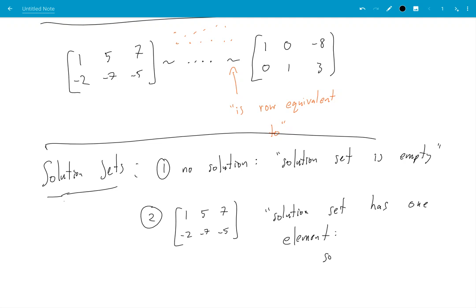So you could say solution set, so this is all kind of tedious, I apologize. Solution set is, okay, a brace to indicate we have a set. And then just the ordered pair, negative 8, 3. All right, this is all in reference to this thing.